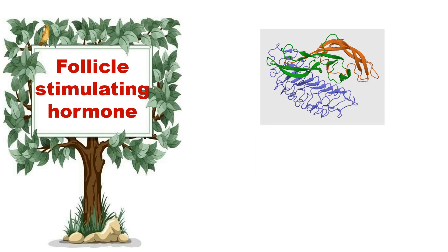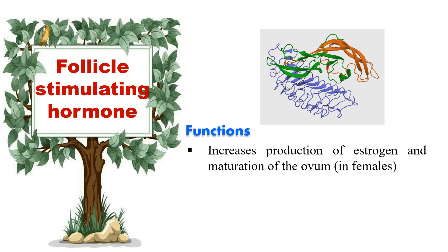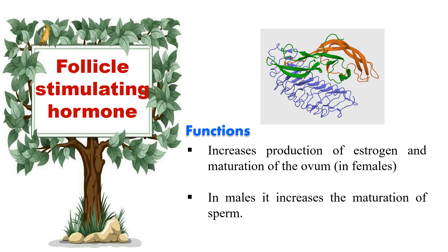Next hormone is follicle stimulating hormone (FSH). FSH is a 35.5 kilodalton glycoprotein heterodimer consisting of two chains: an alpha chain of 96 amino acids and a beta chain of 111 amino acids. The sugar portion of this hormone is covalently bonded to asparagine and is composed of N-acetylglucosamine, mannose, galactose, and sialic acid. Its function is to increase the production of estrogen and maturation of ova in females, and increase the maturation of sperm in males.